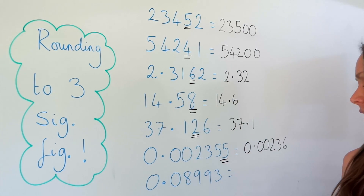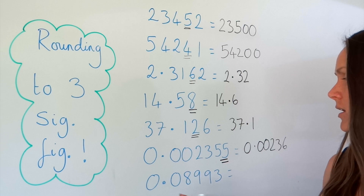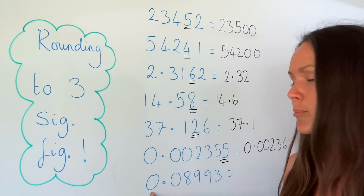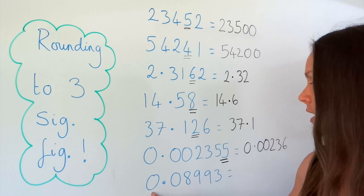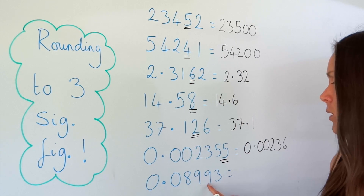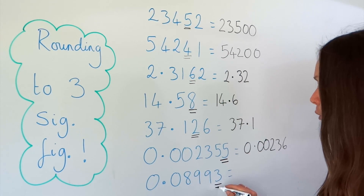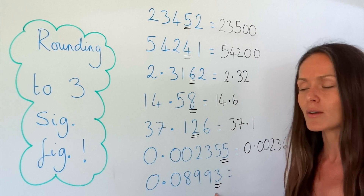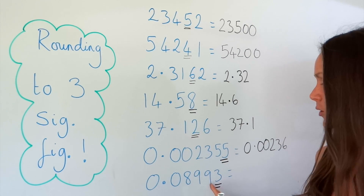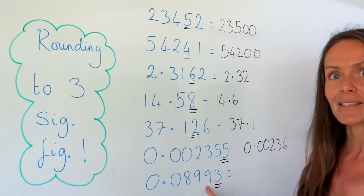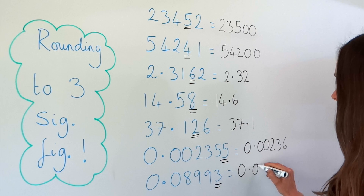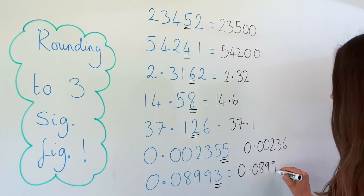Now let's look at this one. Remember, you start counting from the first real figure, which is this one. So one, two, three. The fourth number is smaller than five, so it doesn't round this value up — this stays the same. So it's just 0.0899.